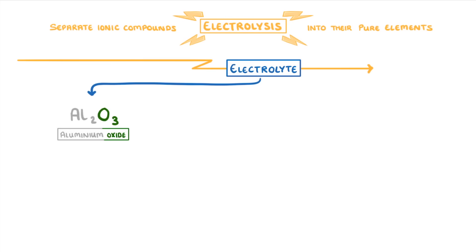As you saw in the last video, electrolysis is a process by which we can separate ionic compounds into their pure elements, by passing an electric current through an electrolyte. So if our electrolyte was aluminium oxide, then we could use electrolysis to split it into pure aluminium and oxygen.